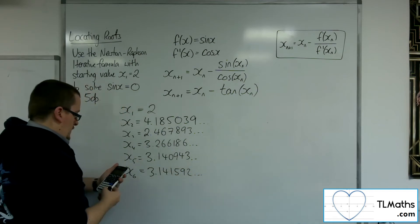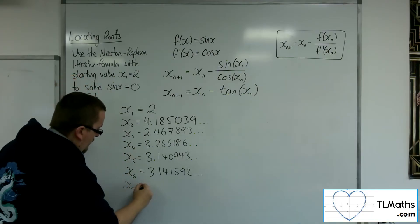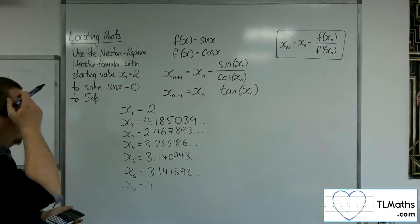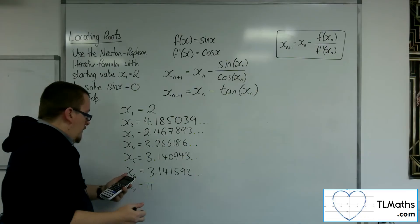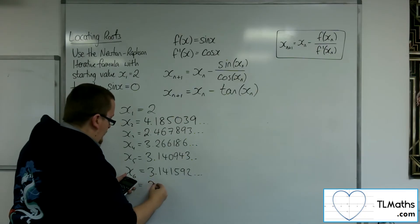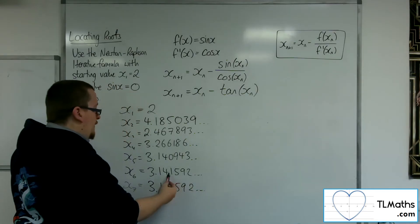X7. And my calculator for X7 just goes directly to pi. OK, so really what I'm looking for here is the decimal equivalent because I just need to check that now I've got agreement to 6,